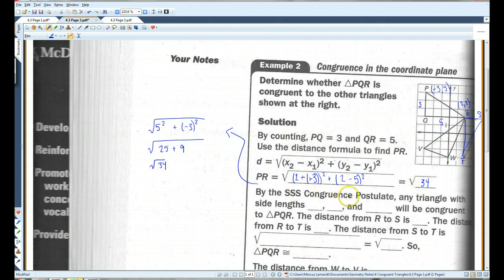So, 25 plus 9, this is going to give you square root of 34. By the SSS congruence postulate, any triangle with the side lengths 3, 5, and the square root of 34 will be congruent to PQR. The distance from R to S, okay?